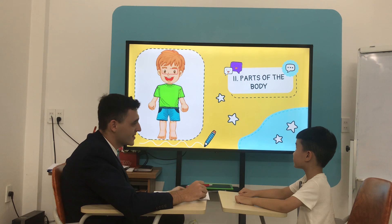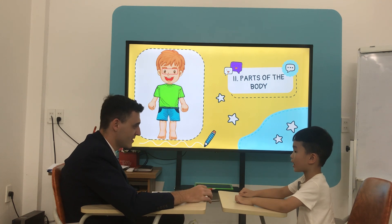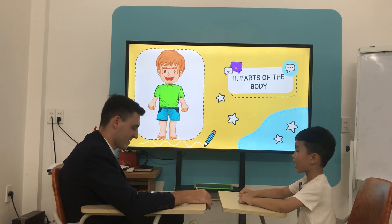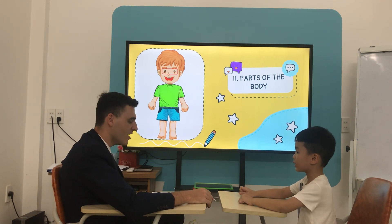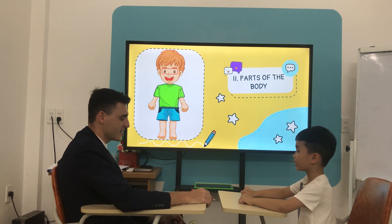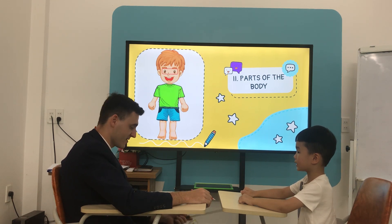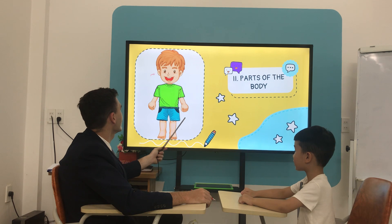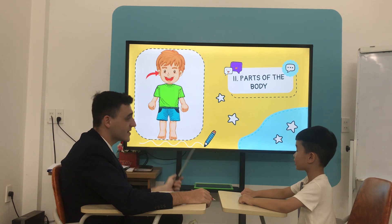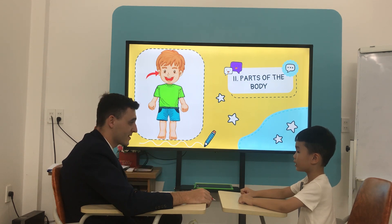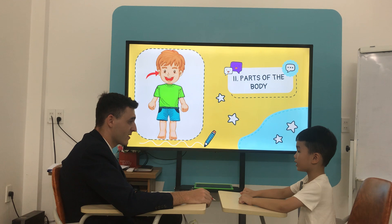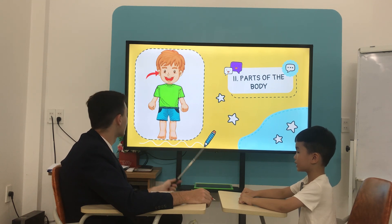What is it? It's an eye. How many eyes do you have? I have 2 eyes. Good job. What is it? Ear. How many ears do you have? I have 2 ears.